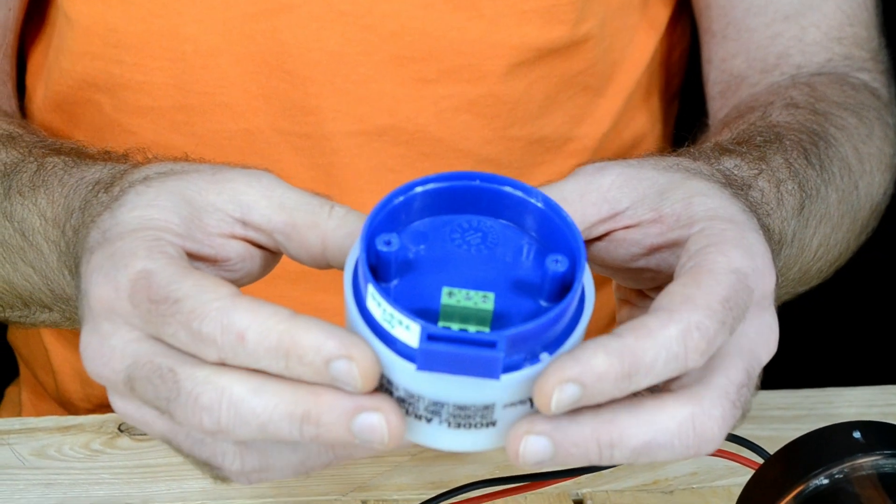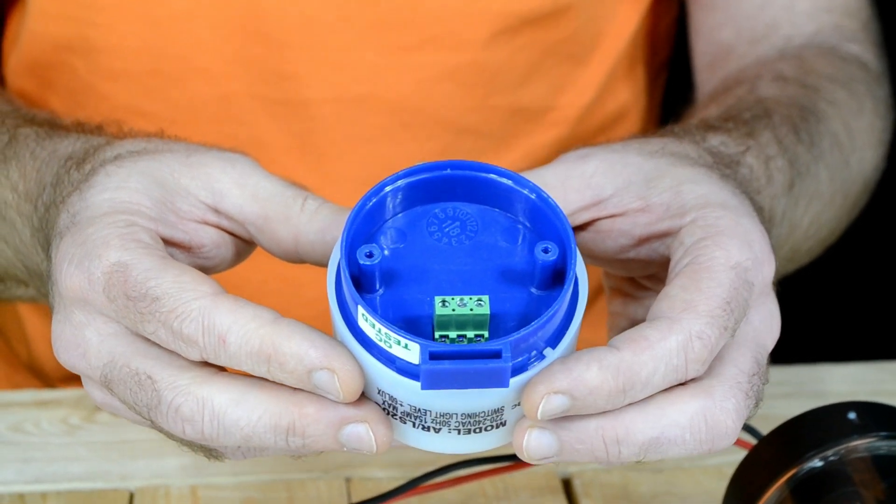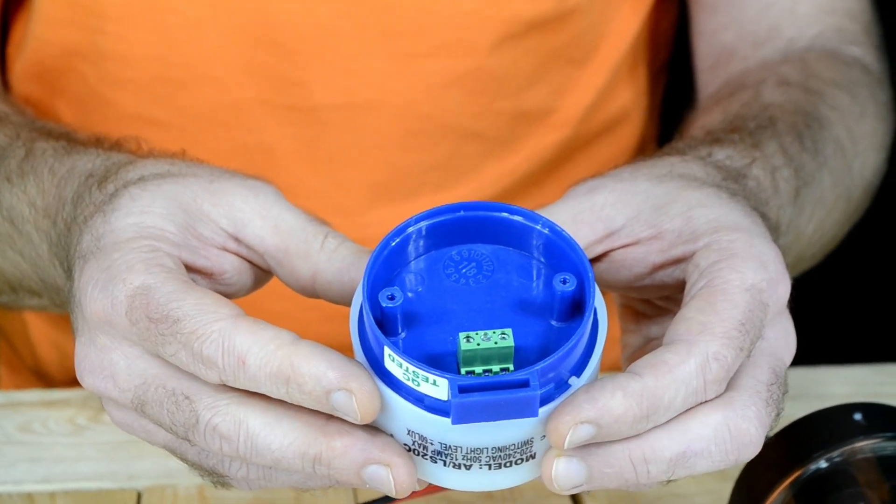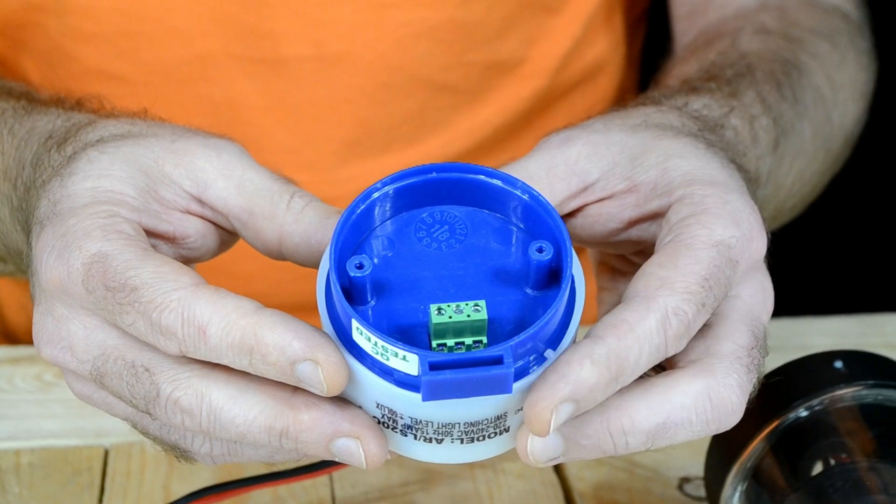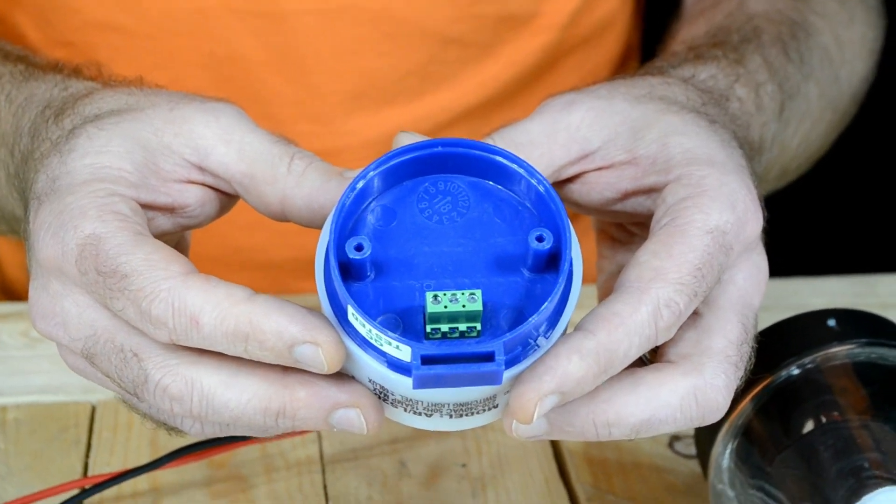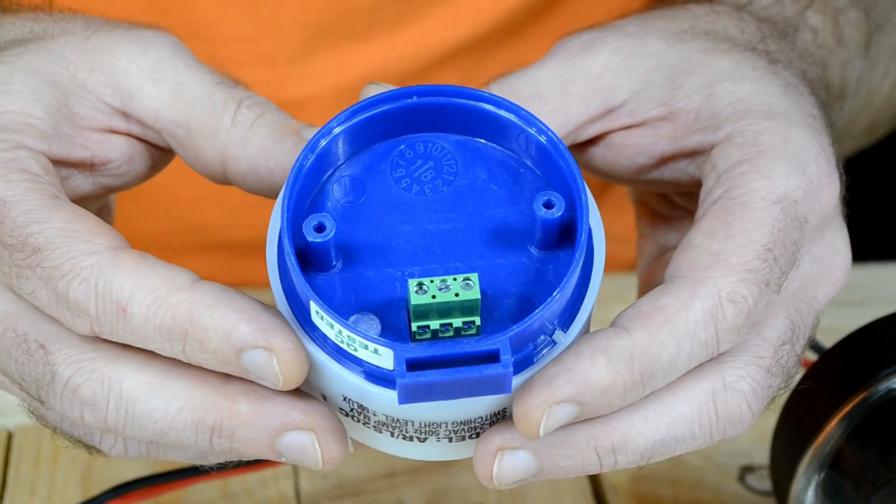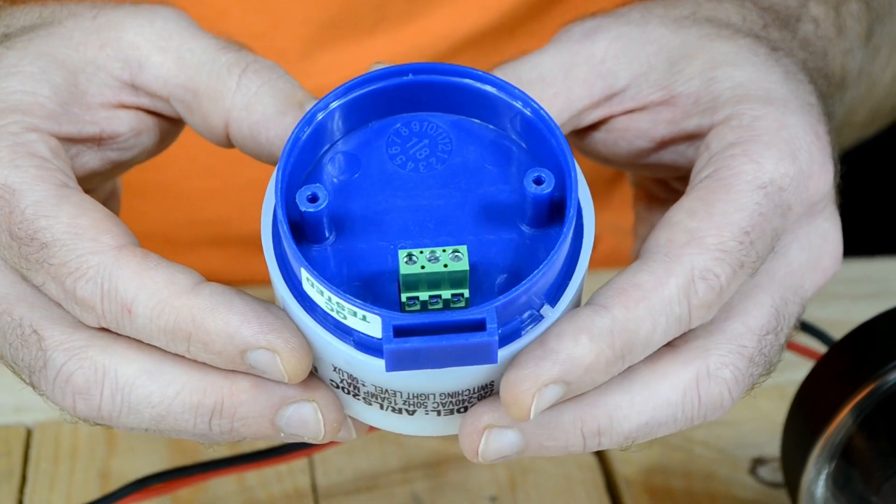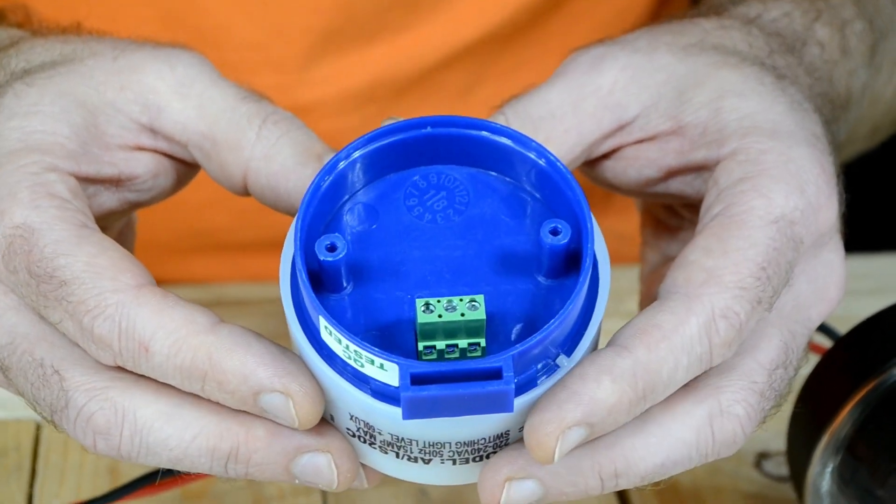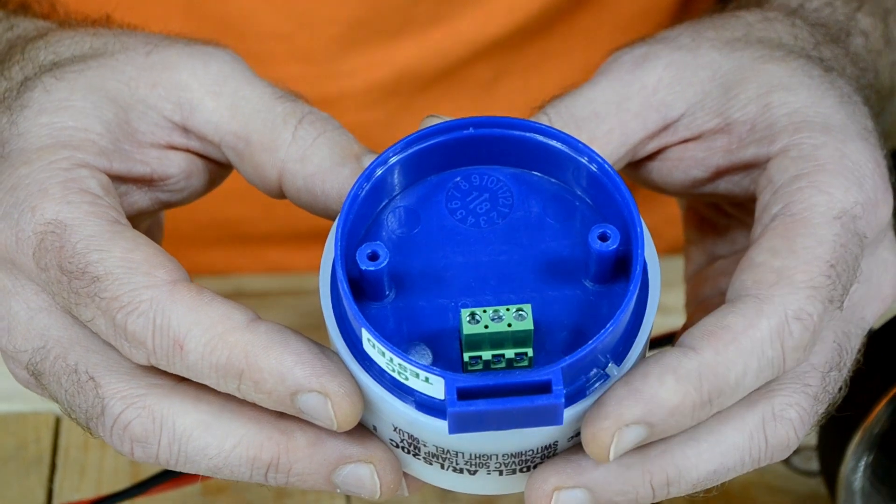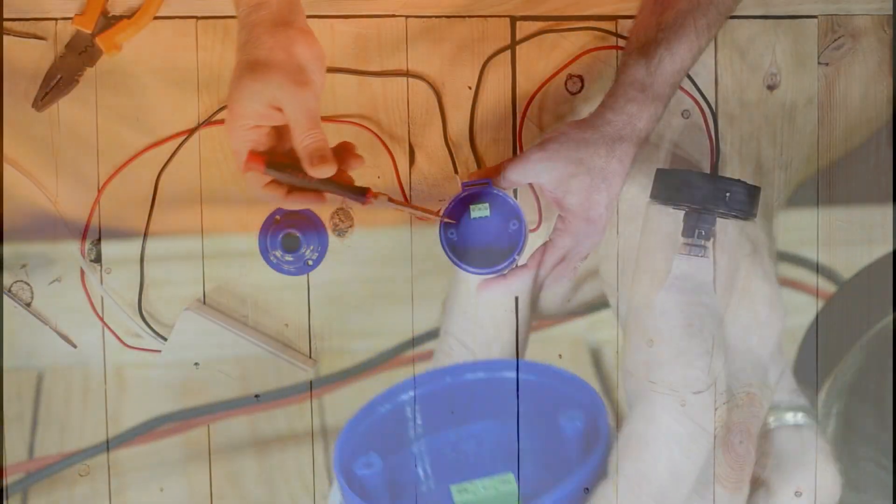Where the confusion normally happens is in the traditional wiring, you have your three wires: a live, neutral and earth. So we tend to get confused, thinking that there's three terminals, one representing each wire. I'm going to show you how to wire this correctly.